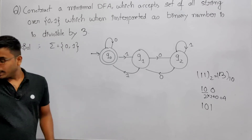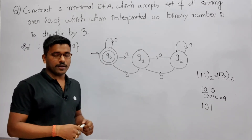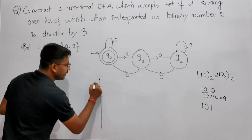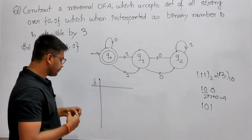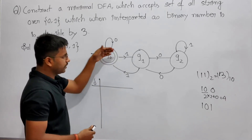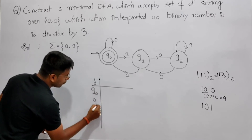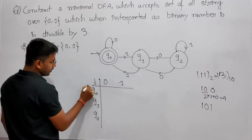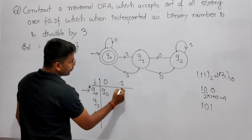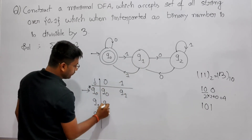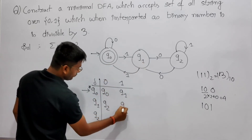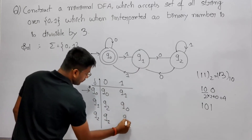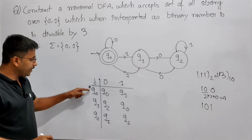Now there is a shortcut here. You know this is a transition diagram; you can represent it using a transition table as well. What you will do: write the states Q0, Q1, Q2 in rows and the input alphabet in columns. Q0 on 0 goes to Q0; Q0 on 1 goes to Q1; Q1 on 0 goes to Q2; Q1 on 1 goes to Q0; Q2 on 0 goes to Q1; Q2 on 1 goes to Q2.